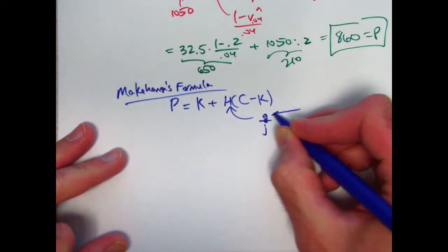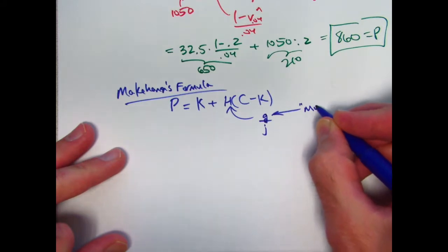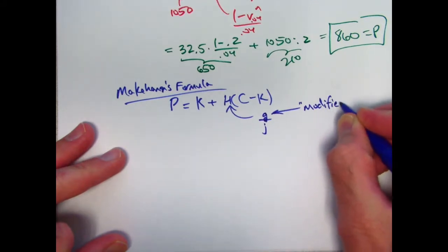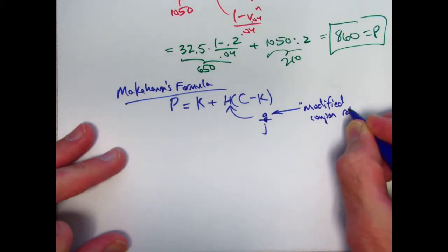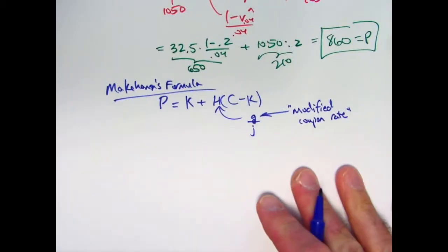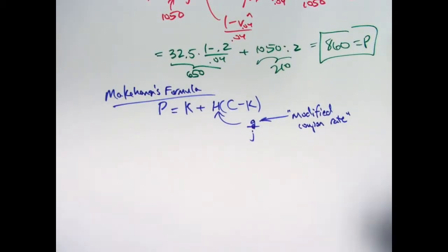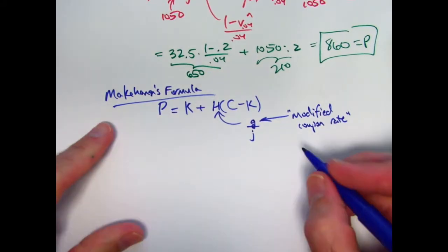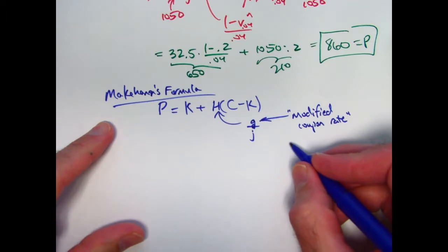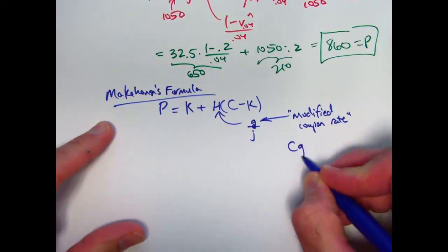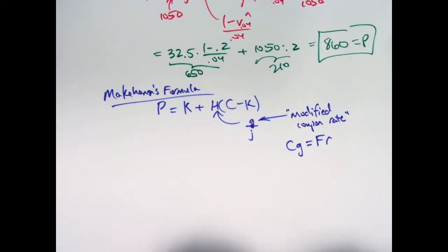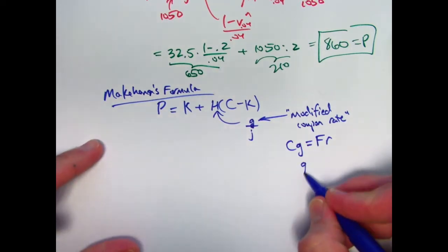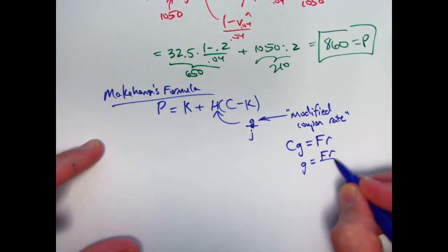G is the modified coupon rate, which is going to be the same as the ordinary coupon rate R when C equals F. But what about when C does not equal F? If G is chosen so that C times G equals F times R, it's another way to find the coupon amounts. In other words, G is F times R over C.